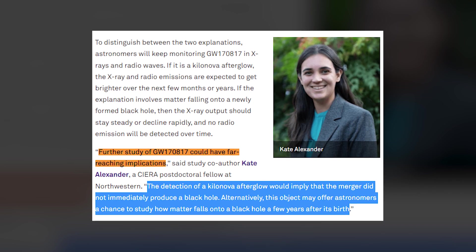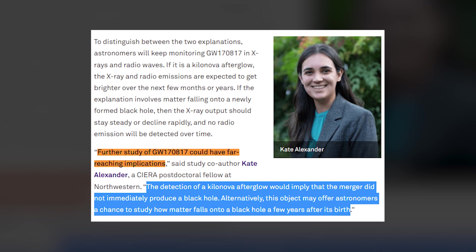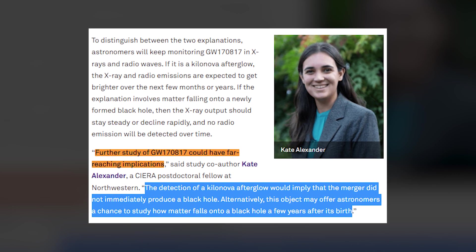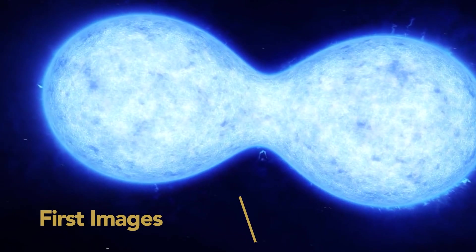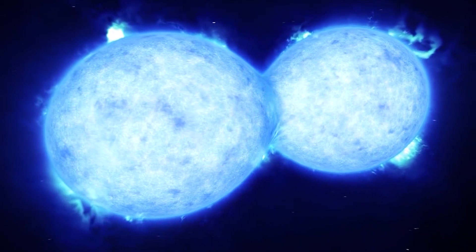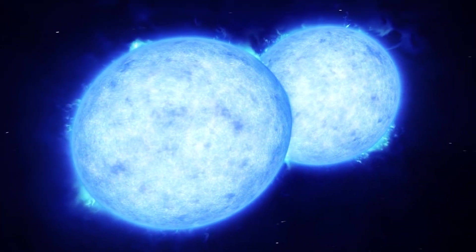Alternatively, this object may offer astronomers a chance to study how matter falls onto a black hole a few years after its birth. First Images. The final chapter of the historic detection of the powerful merger of two neutron stars was written about five years ago in 2017.